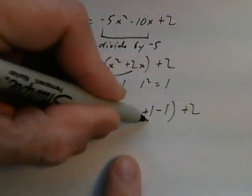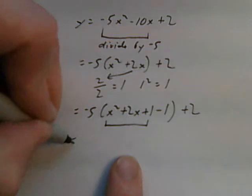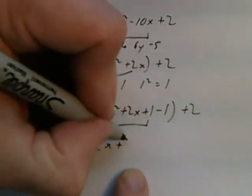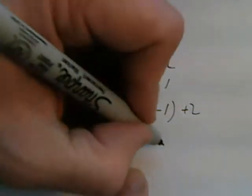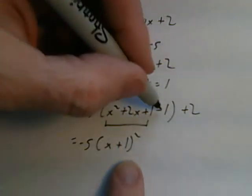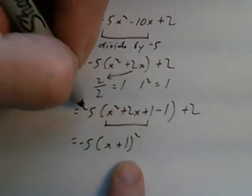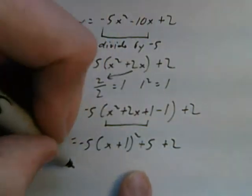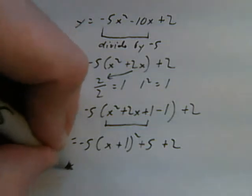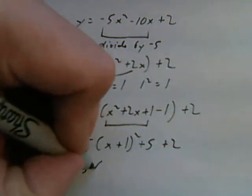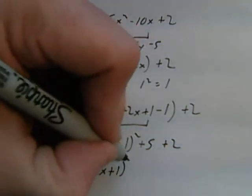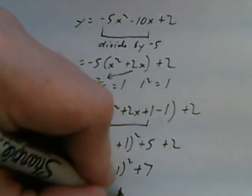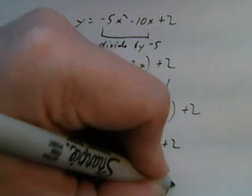Now if I were to factor this, that will work out to x plus 1 squared. Now I have to take into account this negative 1 here. Negative 5 times negative 1 is plus 5 and then the plus 2. Now I just collect my like terms. So my vertex is going to be negative 1 comma 7.